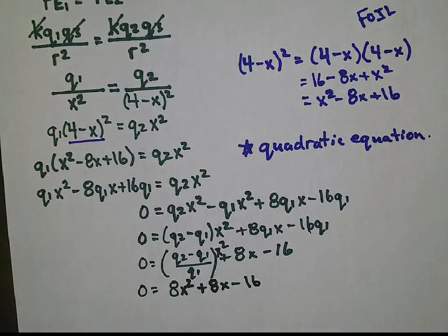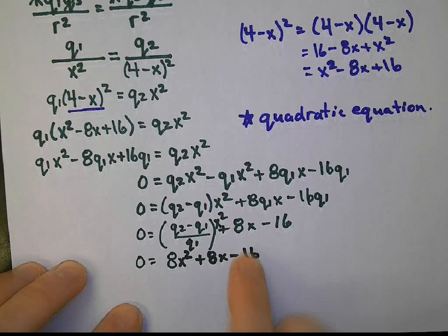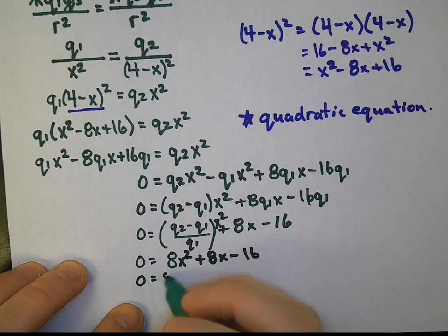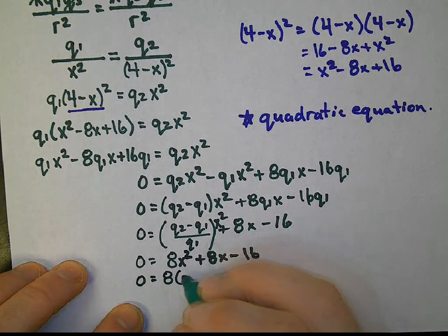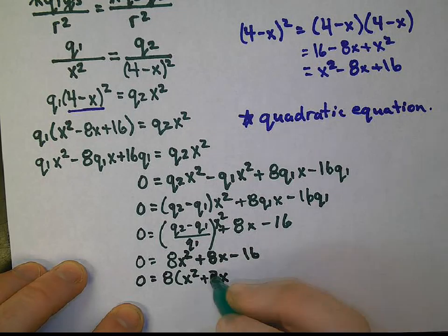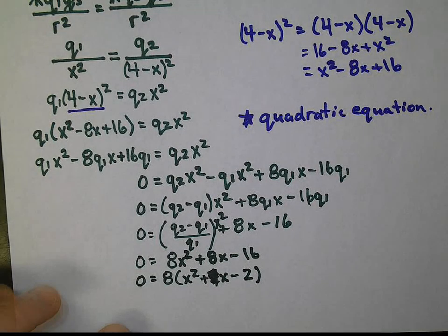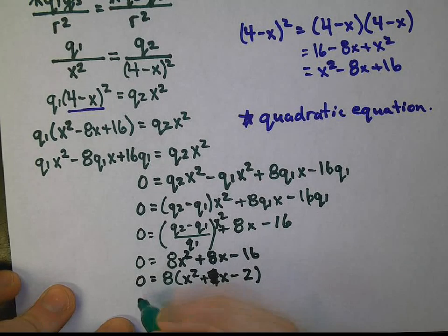So we have 8x squared plus 8x minus 16. Well, this is nice. Each one of these numbers are divisible by 8. So x squared plus x minus 2. Essentially, therefore, divide by 8, we have 0 equals x squared plus x minus 2.